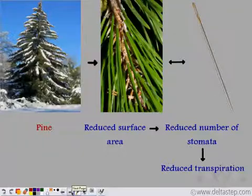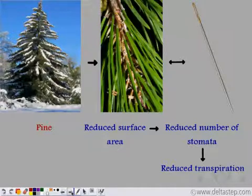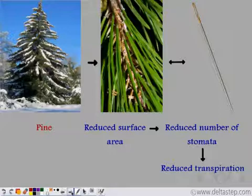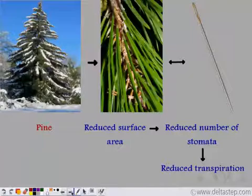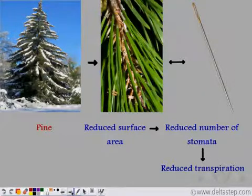Deciduous trees shed their leaves twice a year, and this is their way of reducing the rate of transpiration. Now, what about evergreen plants present in these cold climates? They cannot shed their leaves, so they decrease their leaf surface area into needle-like structures. If the surface area of the leaves decreases, there will be a decreased number of stomata and so there is reduced transpiration.